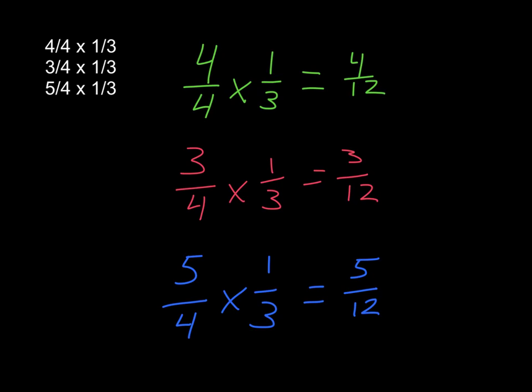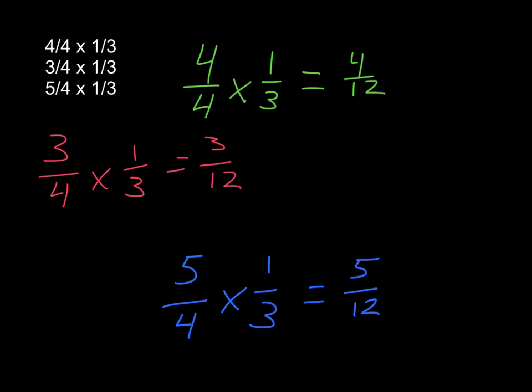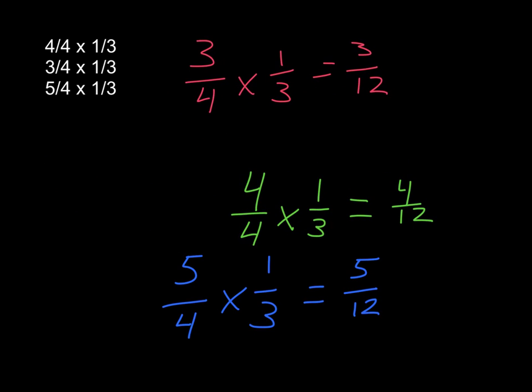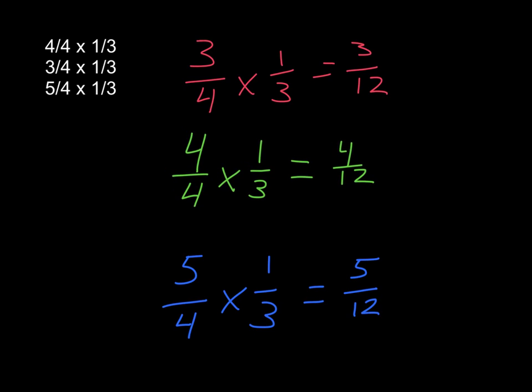We would have one and one fourth. So if I were to move these around, we would have three fourths is the least, four fourths is in the middle, and five fourths is the greatest going from least to greatest.